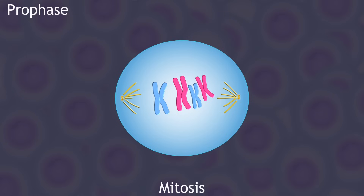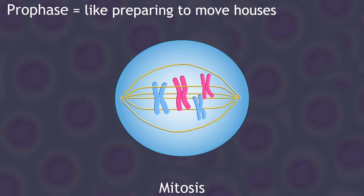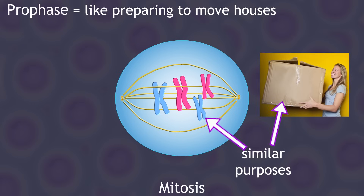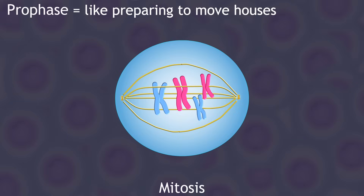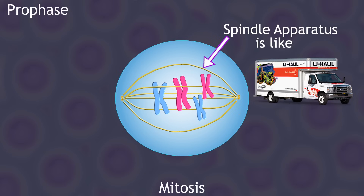Third, the spindle apparatus — a bunch of protein tubes used to move your chromosomes around — also forms. It makes sense that all these things happen during prophase, the beginning of mitosis. It's like moving to a new house: you pack up your stuff before moving, just like the cell packs its chromatin into easily movable chromosomes. You need to leave your house, just like chromosomes need to get out of the nucleus, so it vanishes. And just like you'd have your moving truck ready, the spindle apparatus forms at the beginning of mitosis.